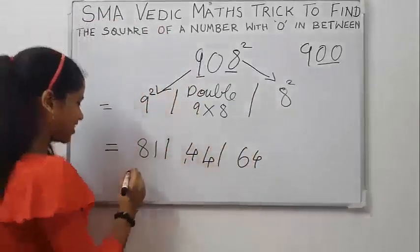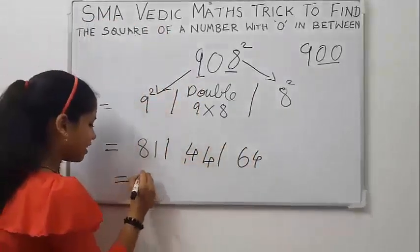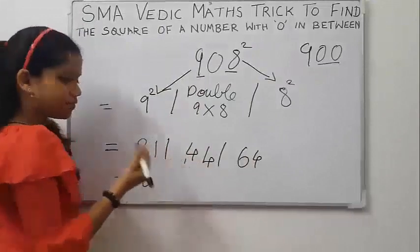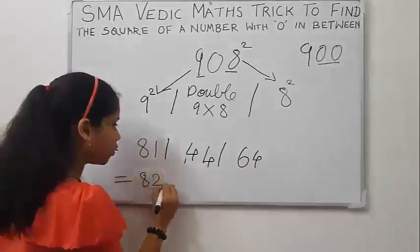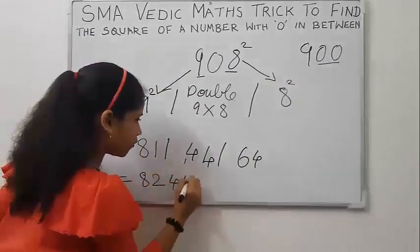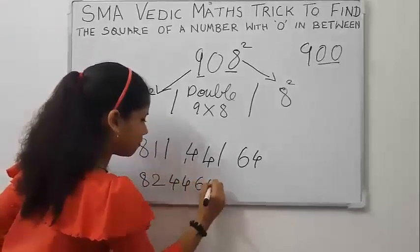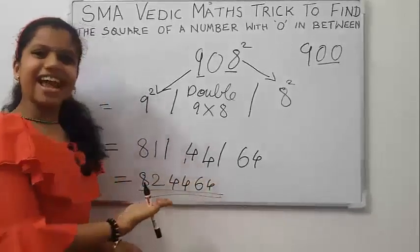So our answer is: 8, then 1 plus 1 is 2, then 44, then 64. So the answer is 824464. This is our answer.